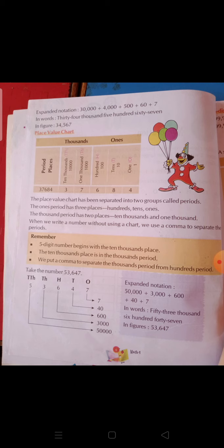So here we have to keep 5 in ten thousands, which is written as 50,000. When we write thousands, we write 3,000 — a 4-digit number. When we talk about ten thousands, we write a 5-digit number. When we talk about hundreds, we take a 3-digit number. When we talk about tens, we take a 2-digit number. And when we talk about ones, we take a 1-digit number.